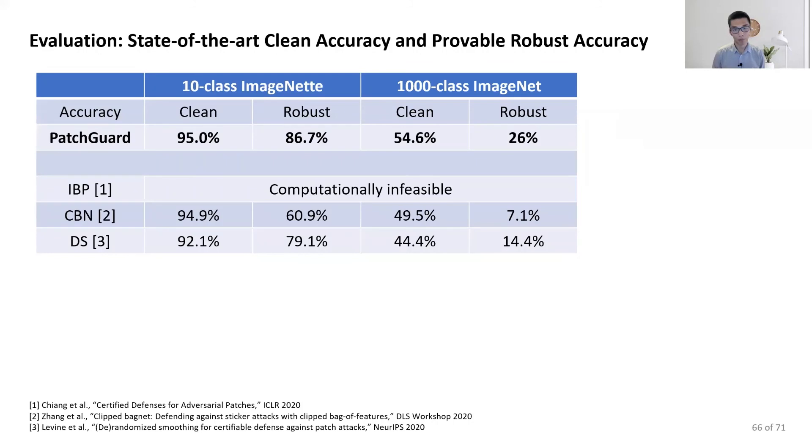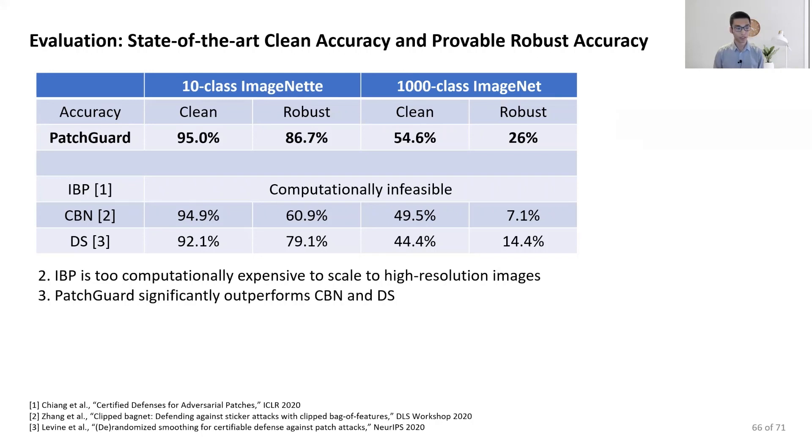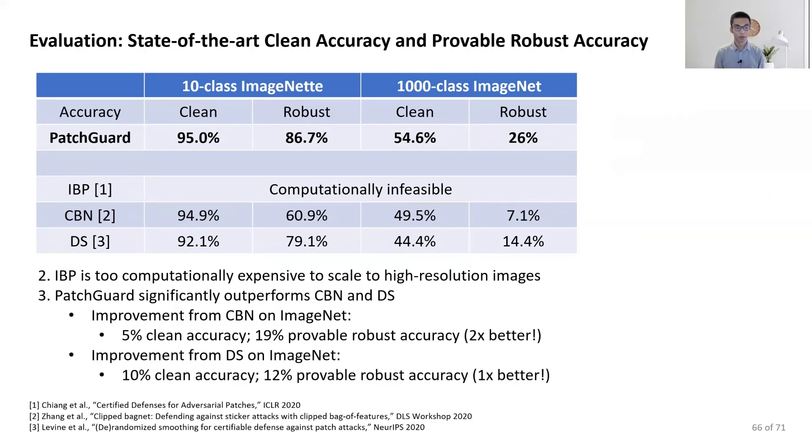Compared with prior works, we find we show the best defense performance. IBP does not work for ImageNet. Compared with CBN on 1000-class ImageNet, we have 5% and 19% accuracy improvement. Compared with DS, we have 10% and 12% accuracy improvement.